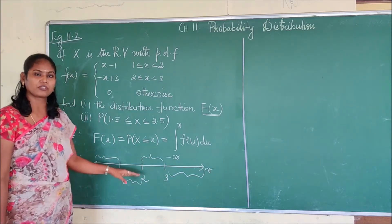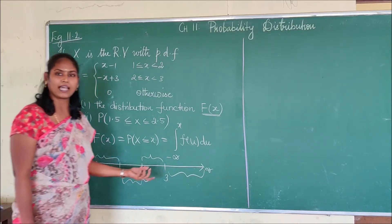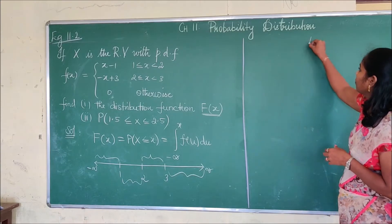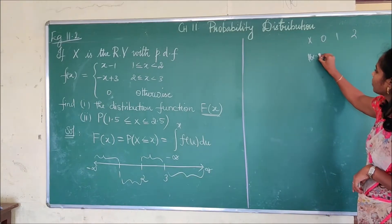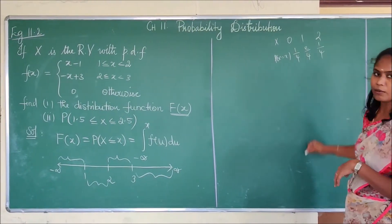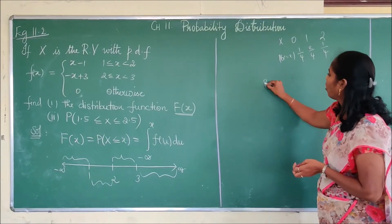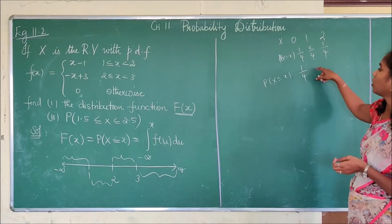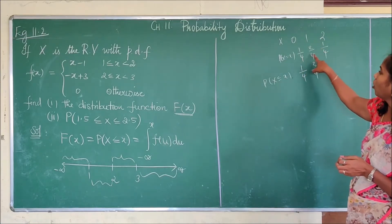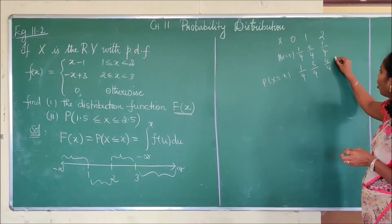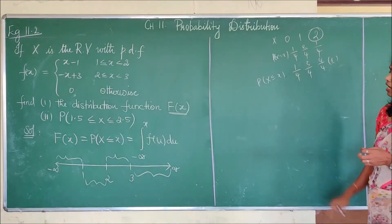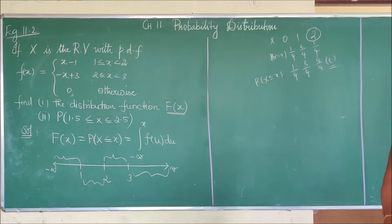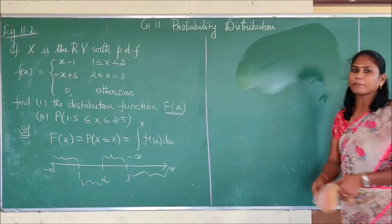To find the cumulative distribution function, recall that for discrete random variables we add all the probability mass functions of previous random variables. For example, if we have values 0, 1, 2 with P(X=x) equal to 1/4, 2/4, 1/4, the cumulative distribution gives 1/4, 3/4, and 4/4 respectively. The final value of the cumulative distribution always equals 1.